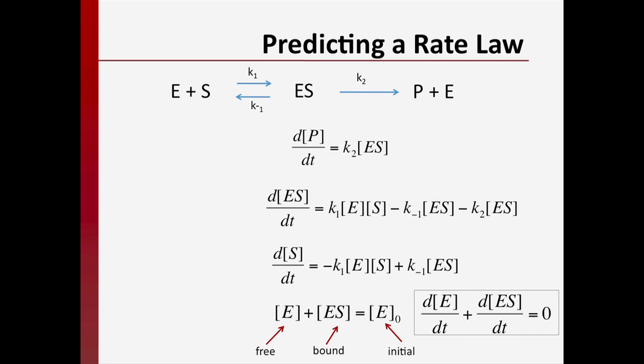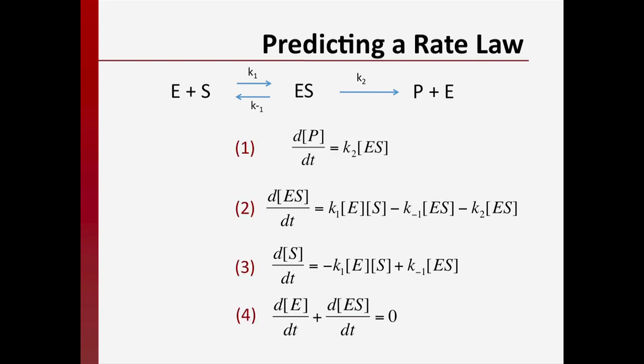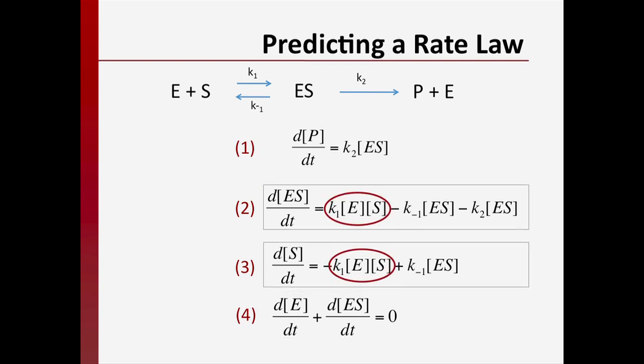So now we have a system of four ordinary differential equations with four variables that all depend on time. Equations 1 and 4 have analytic solutions — we can solve them symbolically — but equations 2 and 3 contain nonlinear terms. When you learn about differential equations in your future courses, you'll see why these equations are difficult to solve and that you will need numerical methods rather than analytical methods.